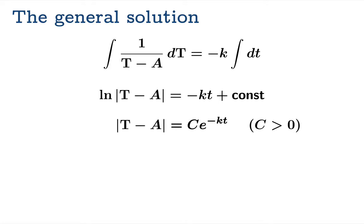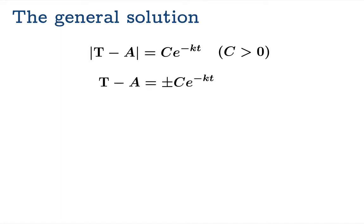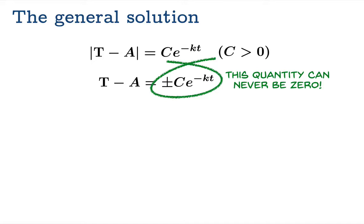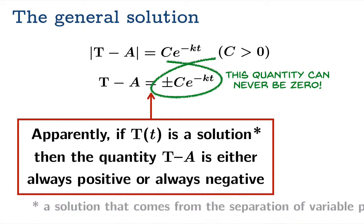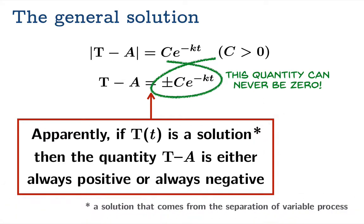Now the absolute value bars are a little bit inconvenient, so let's drop those at the price of inserting a plus or minus on the right side. The thing to notice is so far, algebraically, this quantity on the right side can never be zero. It's e to the something times a non-zero constant. So apparently if capital T of little t is a solution to this differential equation, then the quantity capital T minus A is either always positive or always negative. Now we're going to put a big asterisk here because this is a statement that only applies to a solution that comes about from the separation of variable process. We'll see that there's one other very special solution where this actually does not hold.